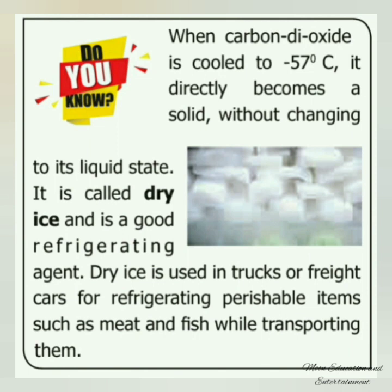Let us learn something new. When carbon dioxide is cooled to minus 57 degrees Celsius, it directly becomes a solid without passing through a liquid state. This state is called dry ice, and it is a good refrigerating agent. Dry ice is used in refrigerated trucks to keep perishable items such as meat and fish cold while transporting them from one place to another.